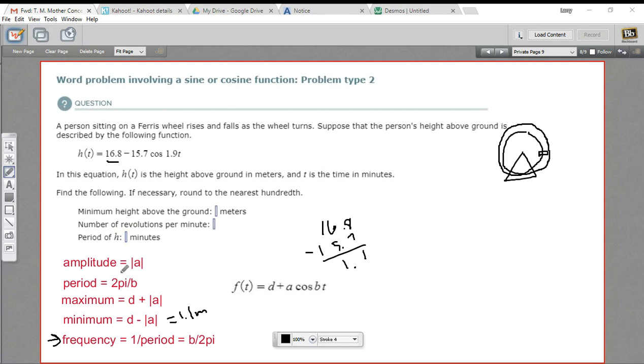So let's go ahead and find the period. The period of any trigonometric function like this is 2π over b, where b is this number that's multiplied by your variable inside the cosine part of the function. In our case, b is 1.9. So our period here is going to be 2π / 1.9.